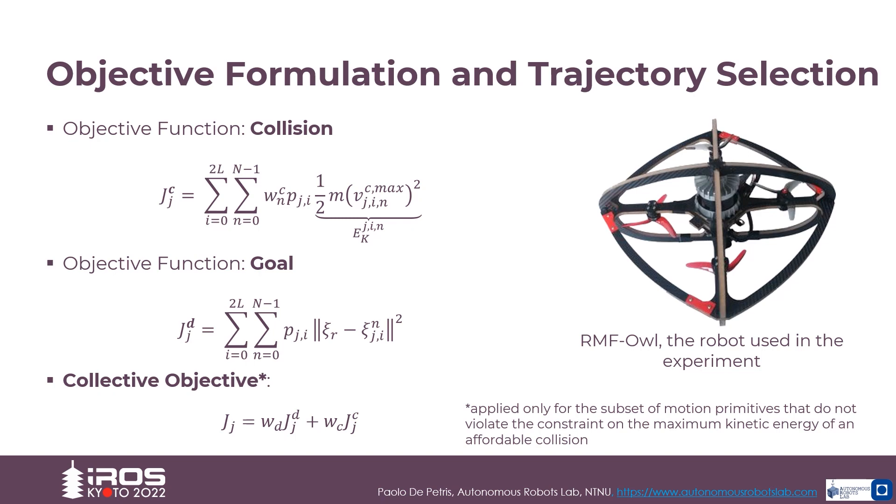We then define a collective objective that accounts for both the extent to which a motion primitive optimizes the goal of reaching a destination and eliminates or reduces the impact of a collision as can be seen in the collective objective equation.